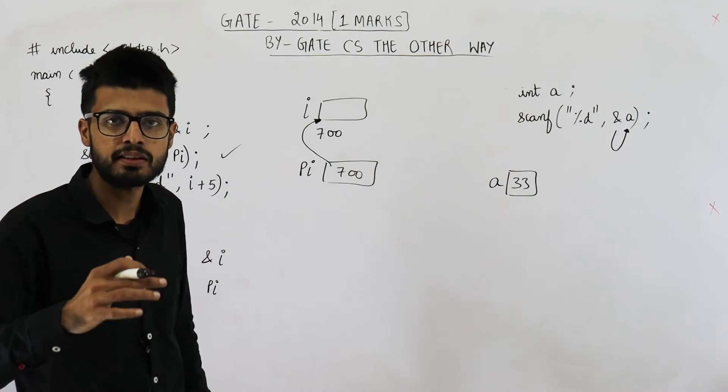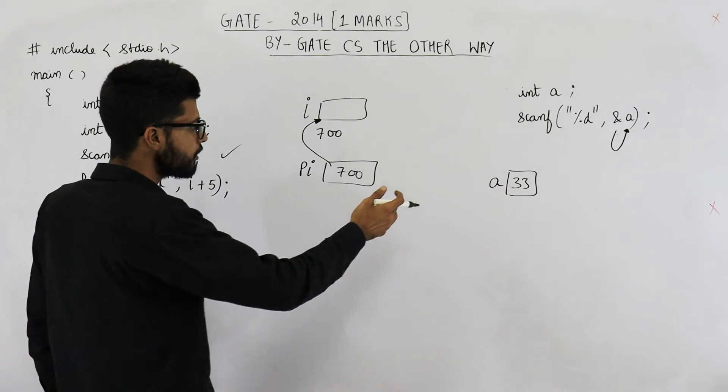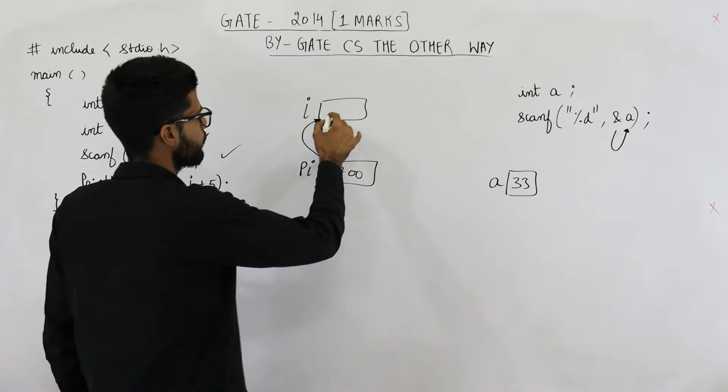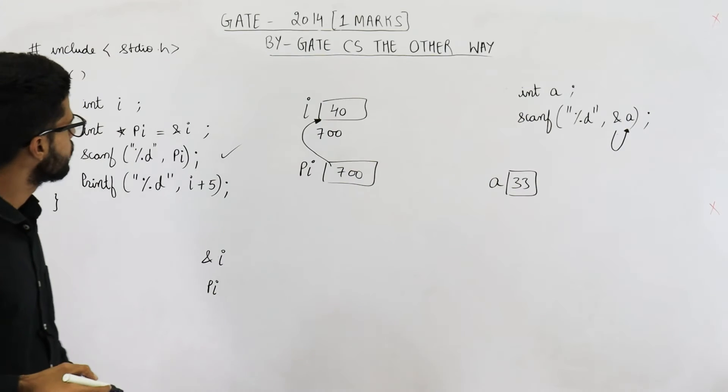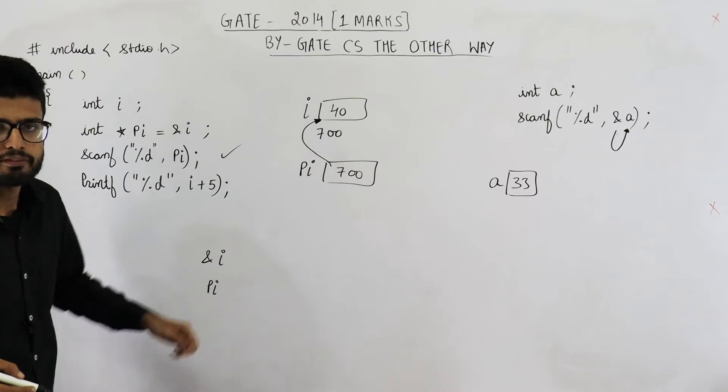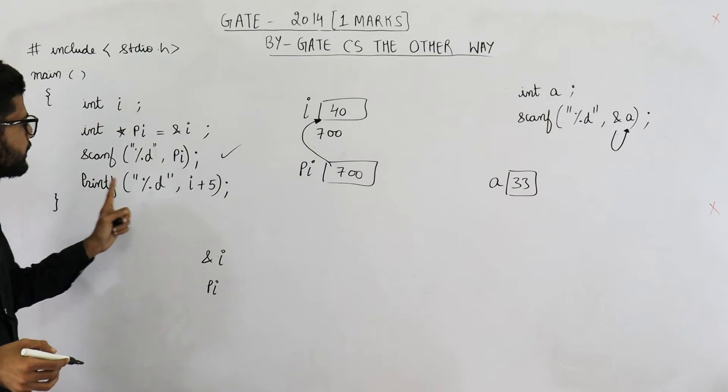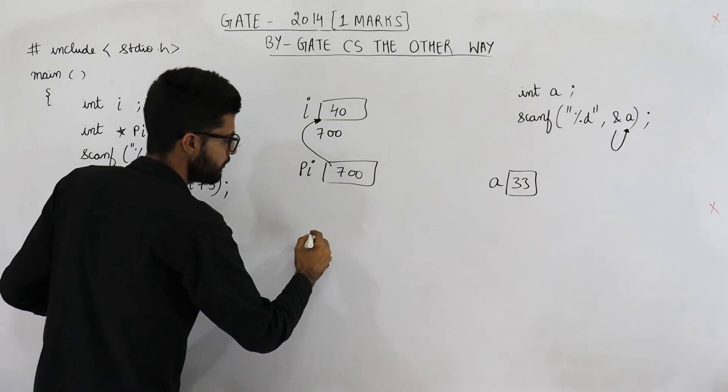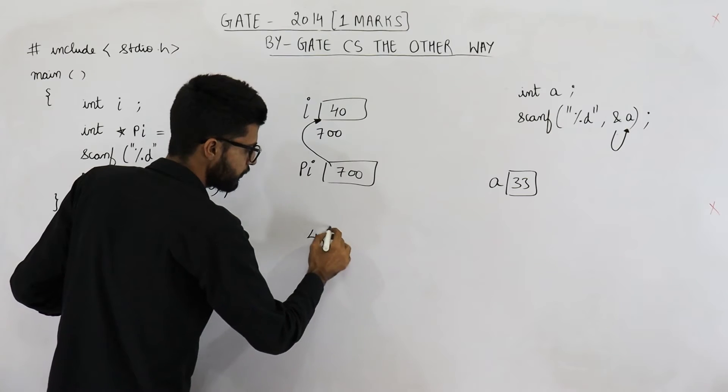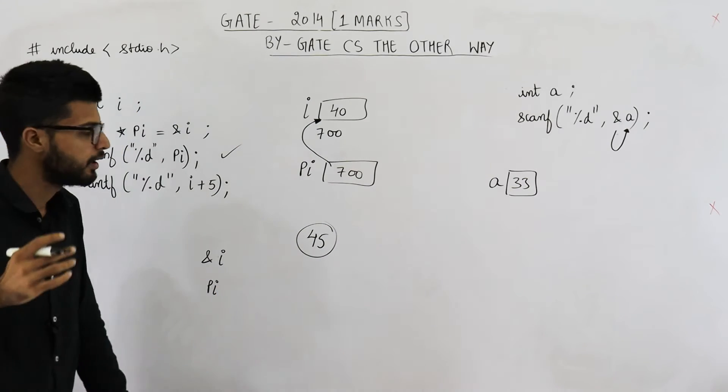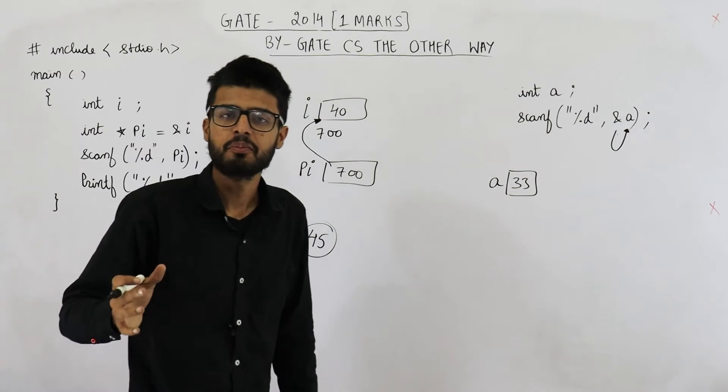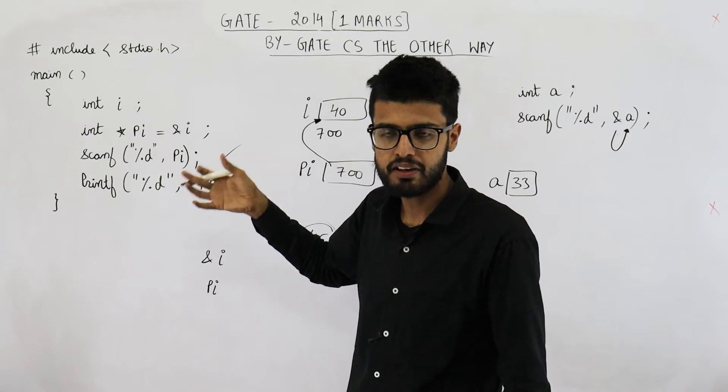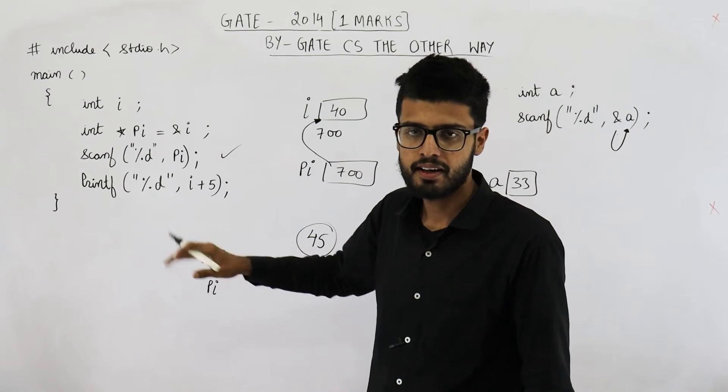Suppose user enters 33. We have already taken this value. Suppose now user enters 40. So 40 gets saved here. Then in next line printf i+5 is done. What is i? i is currently 40. i+5 will be 45. So 45 is printed and answer to this question will be the option which says whatever user has entered, 5 will be added to it and it will be printed.